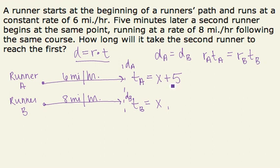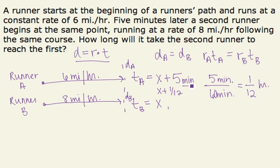Well, I'm almost there, but I realize that I'm in miles per hour, and this plus five is really minutes. So I want to be an hour, so I'm going to say five minutes divided by 60 minutes gives me 1 twelfth of an hour. So I'm going to rewrite the time for A as x plus 1 twelfth of an hour.